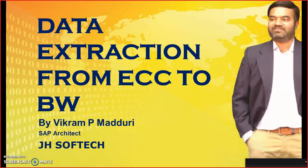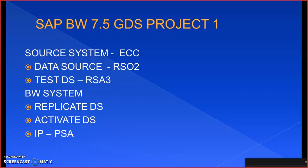Hello everyone. In this session we are going to discuss data extraction from ECC to BW 7.5. What we are doing in this project is getting data from the ECC server from a specific table into our BW system and loading it. In the source system we have to create a data source in RSO2 transaction and test it in RSA3. We can also do testing in RSO2 by clicking on 'test extraction'.